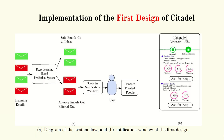Here we can see the implementation of the first design of Citadel. In Figure A we can see the diagram of the system flow, and in Figure B we can see the notification window of the first design user interface. Incoming emails first go to the deep learning-based prediction system. Safe emails go to the inbox, and abusive emails get filtered out, which are shown in the notification window. Users, after seeing the toxicity readings in the user interface, can ask for help by contacting trusted people.